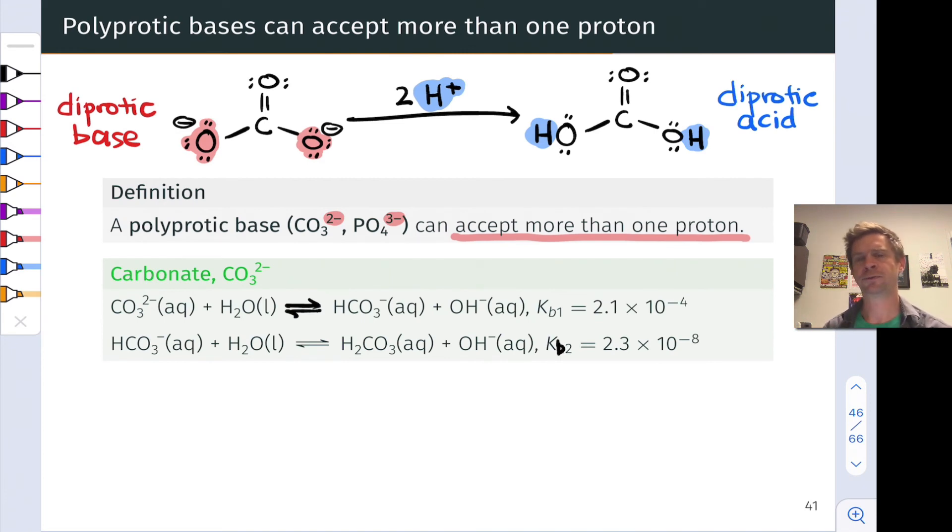Just as we looked at for the diprotic acid, carbonic acid, the diprotic base carbonate can engage in two reactions with water to produce hydroxide two different ways. Carbonate can accept a proton to create bicarbonate, HCO3-, and hydroxide, OH-. And that's got a Kb1 value of 2 times 10 to the negative 4.